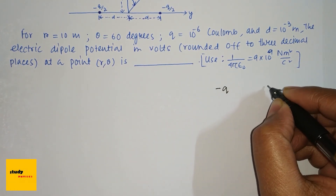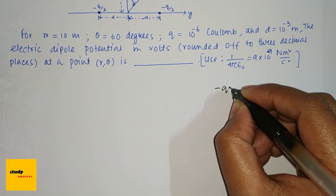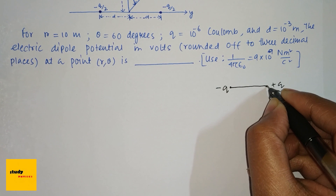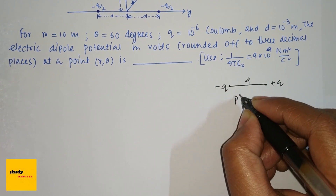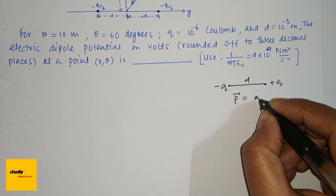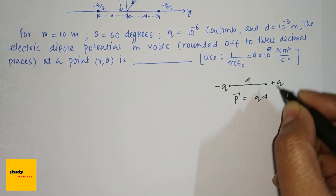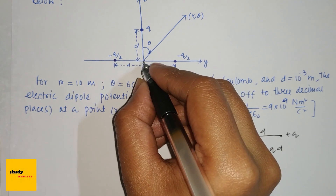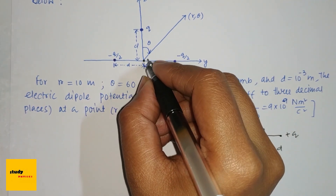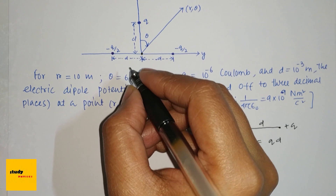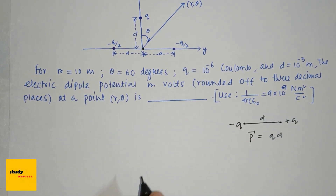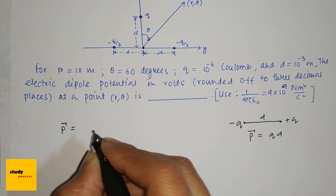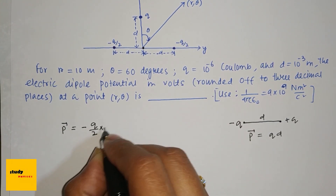The dipole moment concept: if this is minus q and this is plus q charge, which is separated by distance d, then the dipole moment p is q into d, where q is the magnitude of either charge. Similarly, if we consider plus q and plus q by 2 charge here, the dipole moment p is minus q by 2 into d.